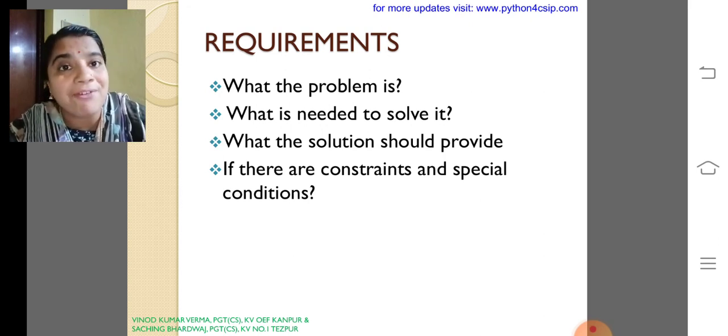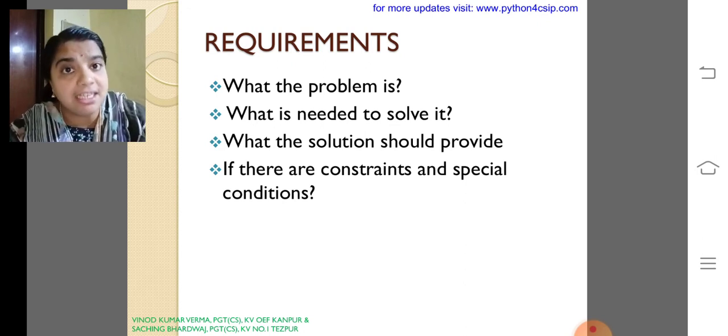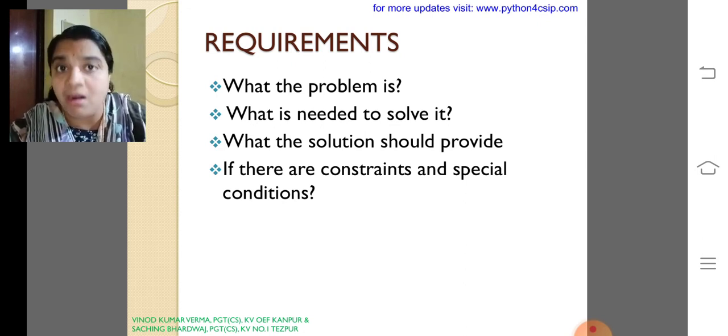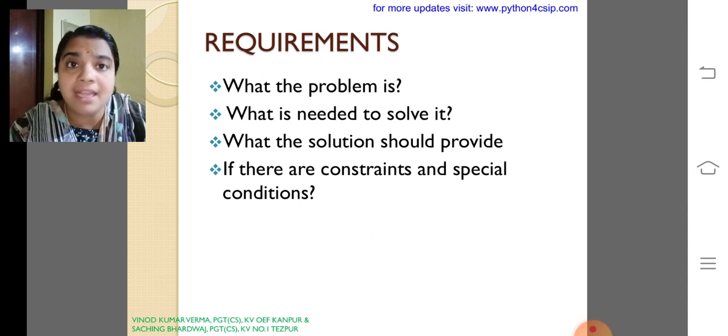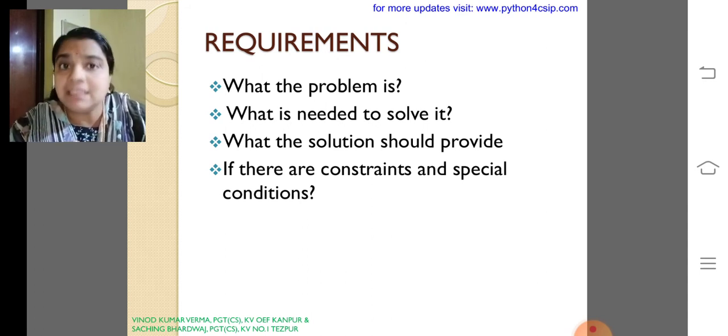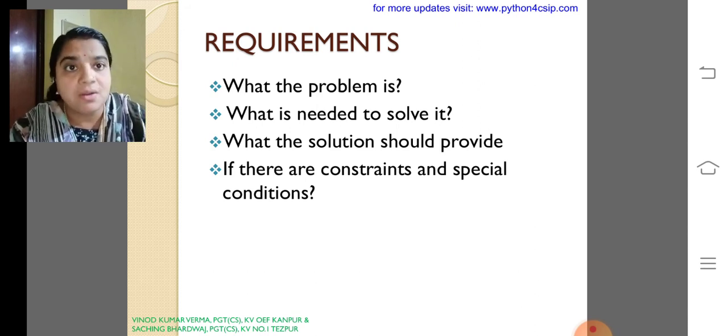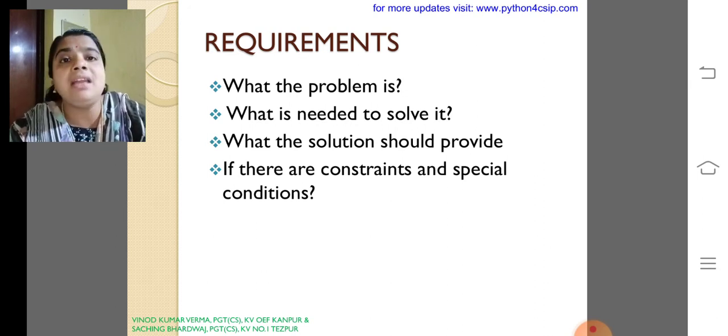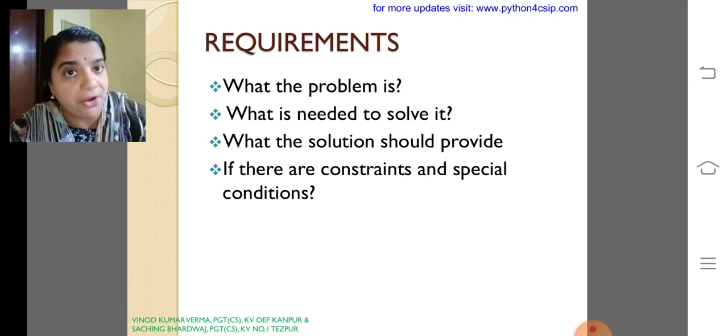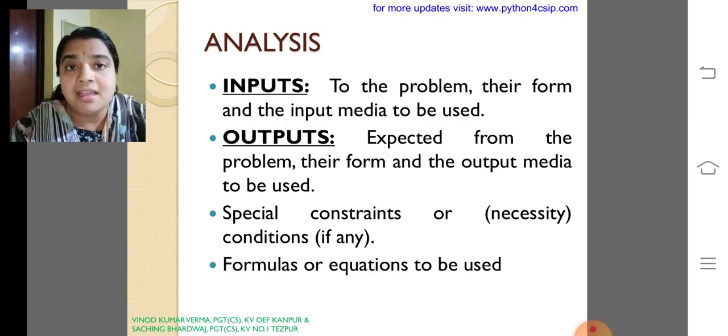So what the solution will provide? The square of odd numbers. If there are constraints or conditions, the condition is it should be odd and it should be in the range of 6 to 12. So as a requirement I need to analyze all these things: what is the problem, what needs to be solved, what is the solution, and if there is any condition or not.